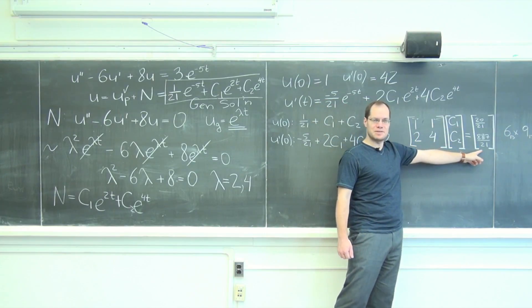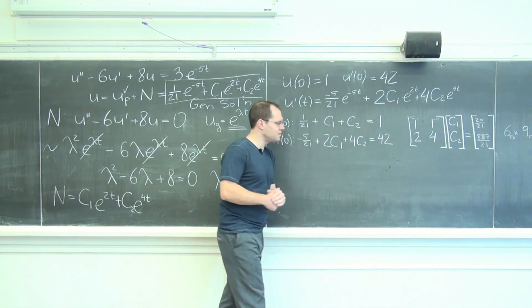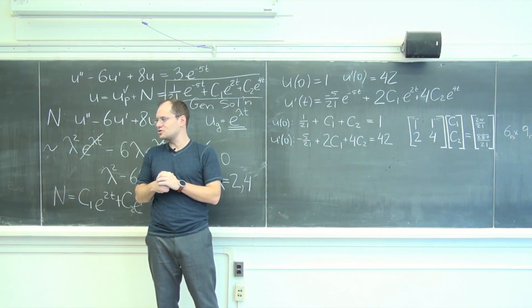Only the right hand side depends on the initial conditions. You will always have a single c1 and a single c2.